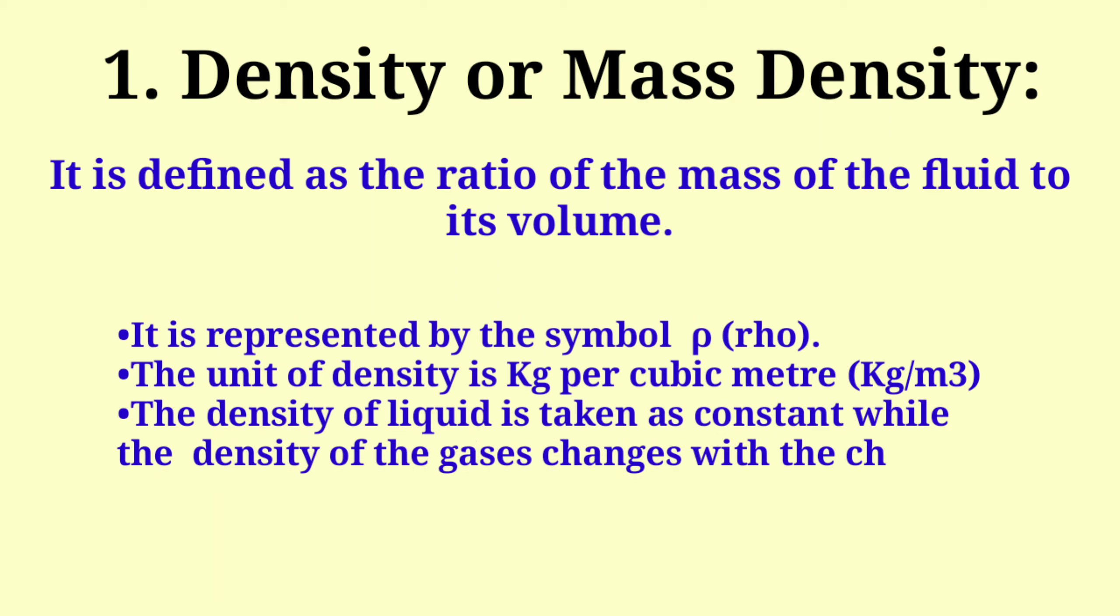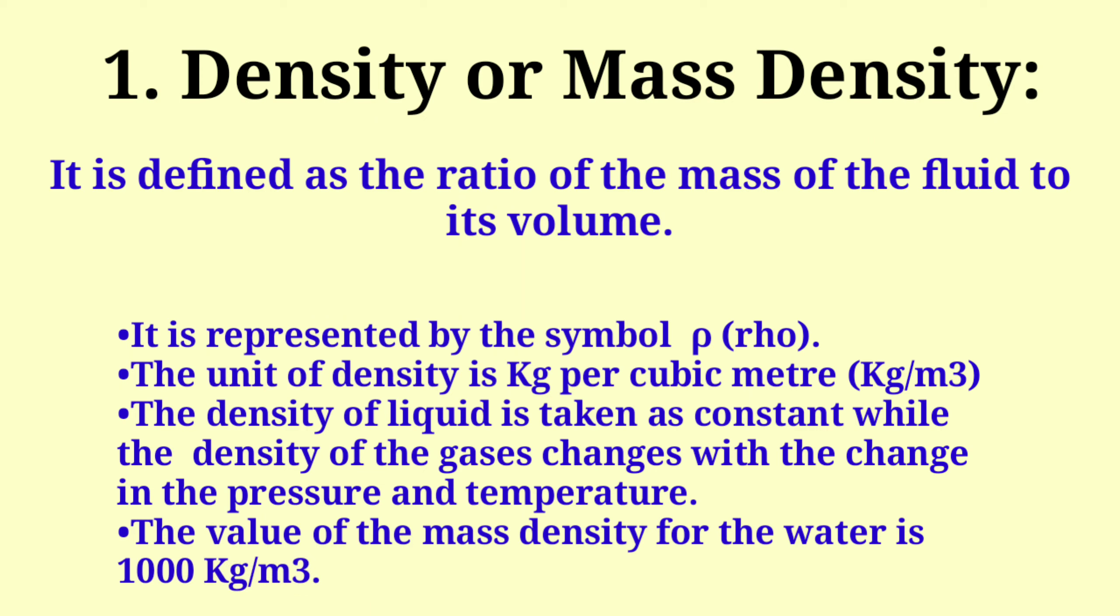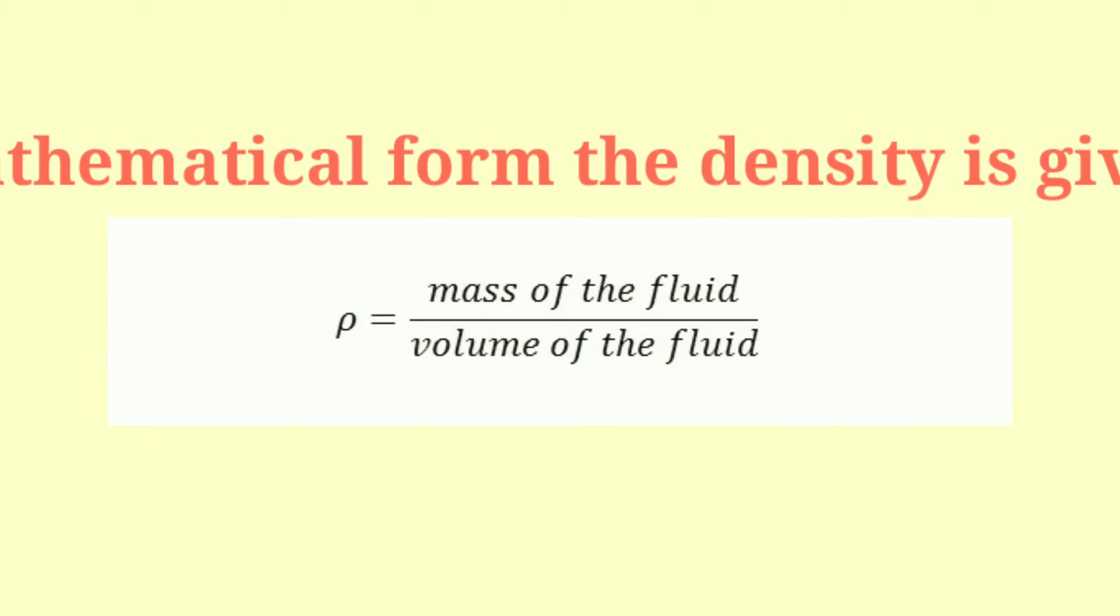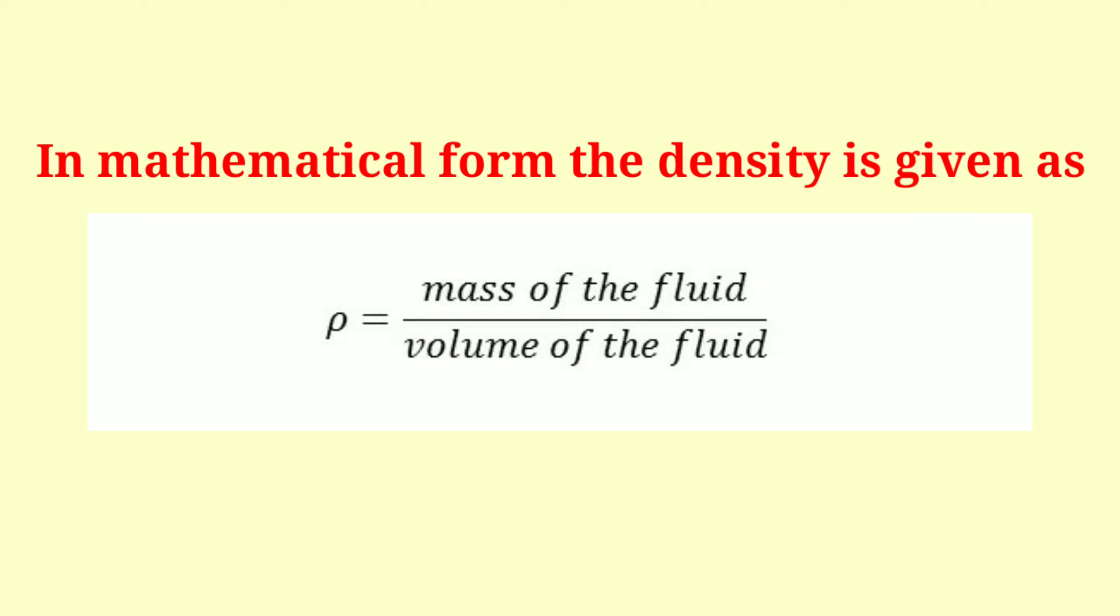The density of liquids is taken as constant, while the density of gases changes with pressure and temperature. The mass density of water is 1000 kg per cubic meter. Mathematically, ρ = mass of fluid / volume of fluid.